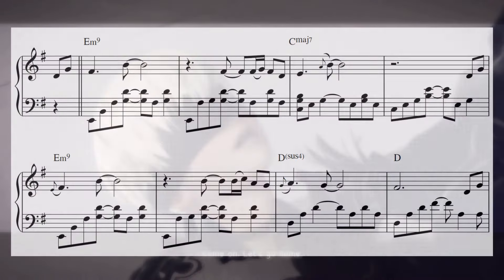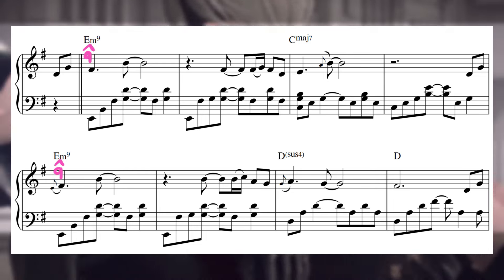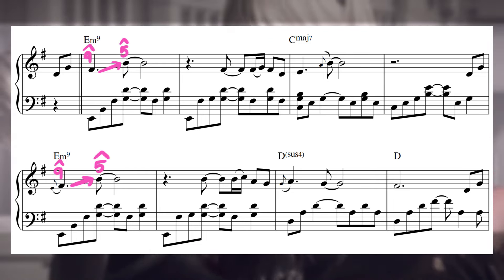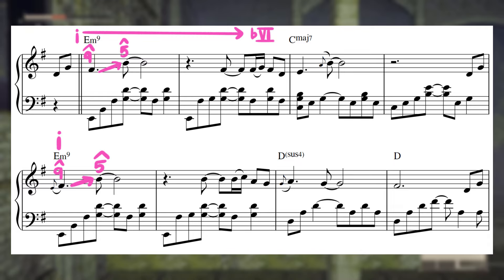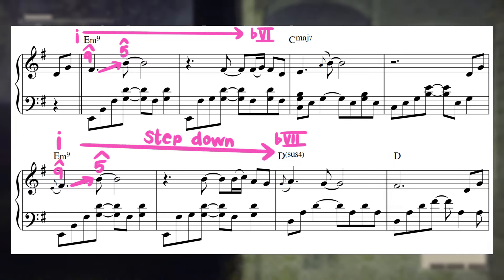Check out the guitar melody on the track Repose, which again emphasizes the 9th of our tonic E minor chord before leaping up to the 5th of the chord. The harmony in this piece is about as soft as it gets, with the tonic E minor trading with a colorful C major 7 chord a 3rd below, and a D sus to D move a whole step below.